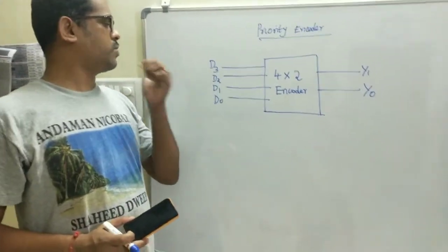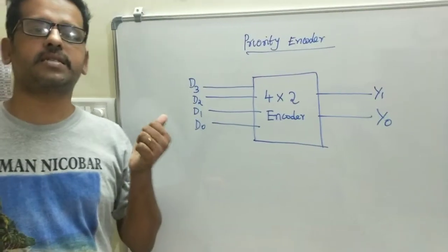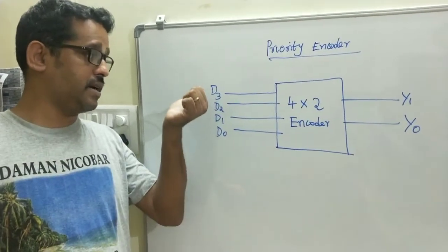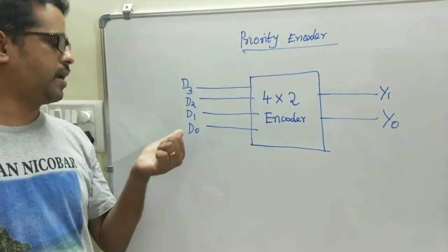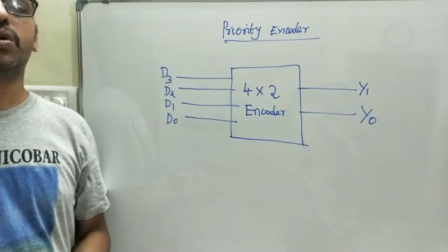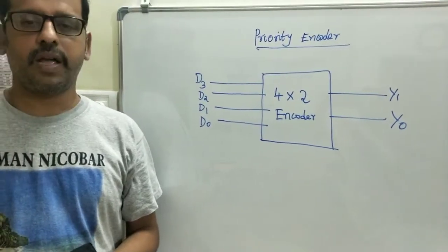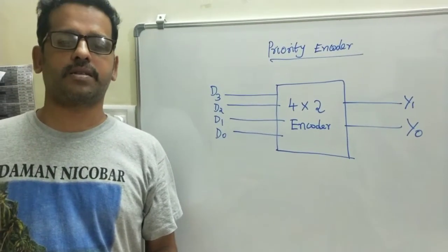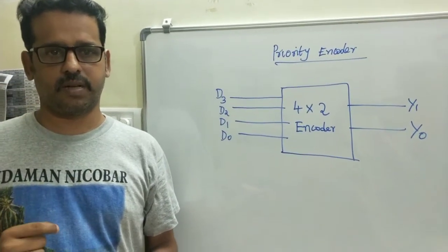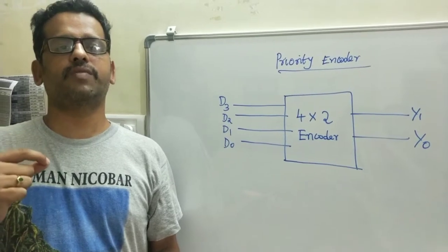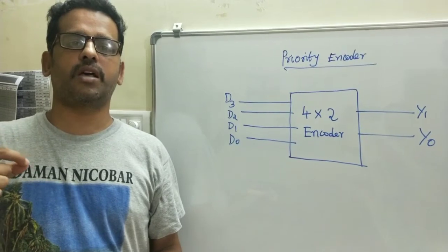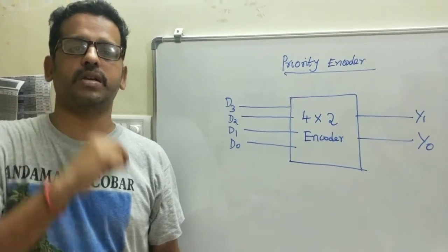D refers to the device. The device with the highest suffix will have the highest priority. That is, D3 is the device having highest priority and D0 is the device having the lowest priority. So if any device is requesting a service, the device with highest priority will be given service first. Then the device with lower priority will be given service, provided that the device with higher priority status should be 0.